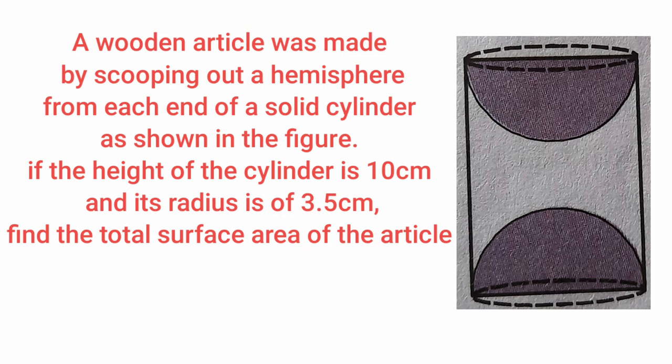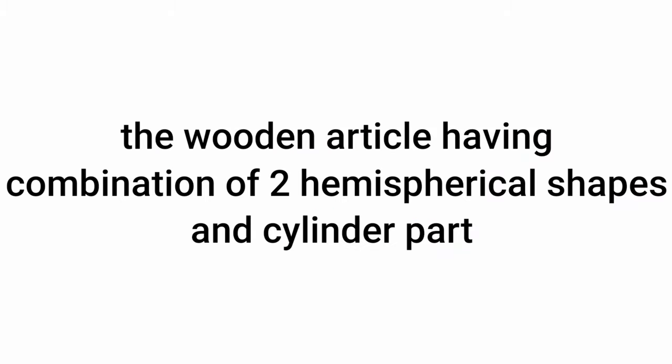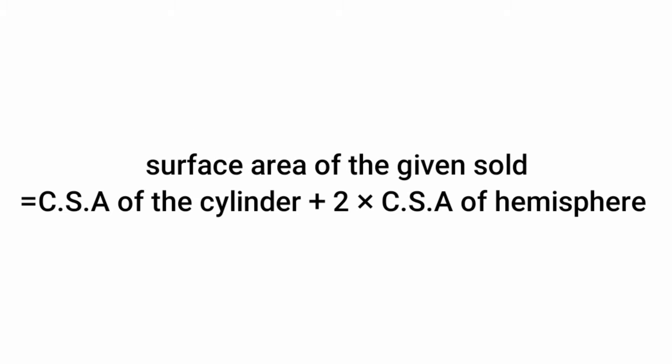Now let us solve another problem. A wooden article was made by scooping out a hemisphere from each end of a solid cylinder as shown in the figure. If the height of the cylinder is 10 cm and its base radius is 3.5 cm, find the total surface area of the article. This wooden article is a combination of two hemispherical shapes and a cylinder part. Total surface area equals curved surface area of the cylinder plus 2 times the curved surface area of the hemisphere.